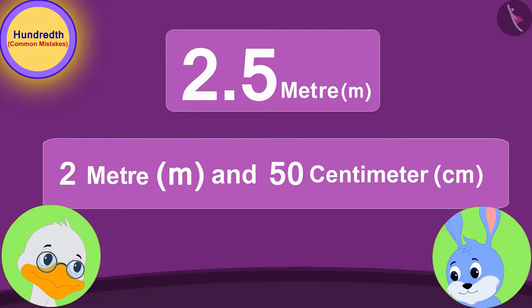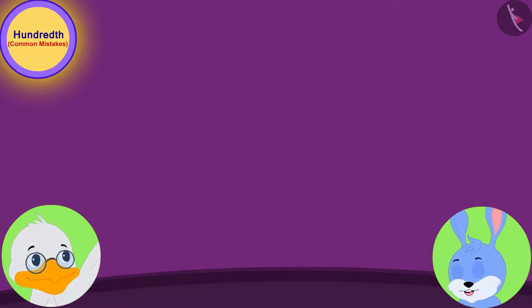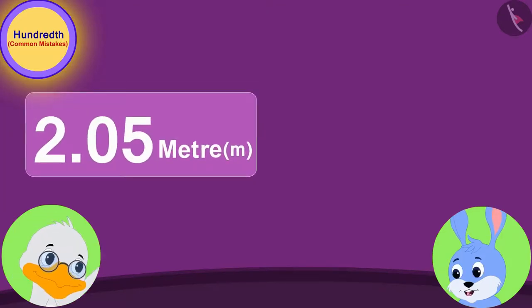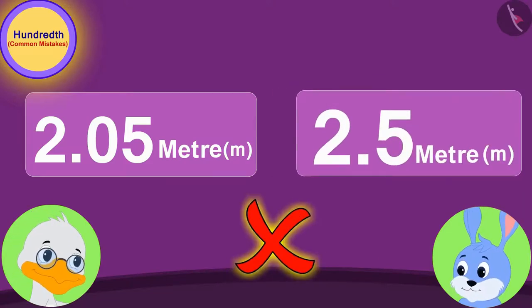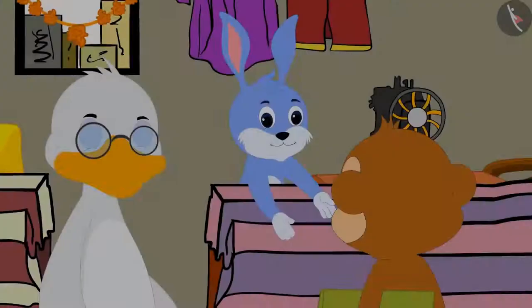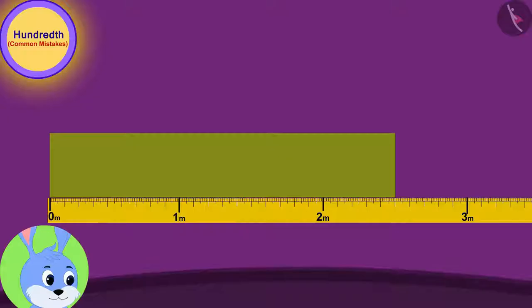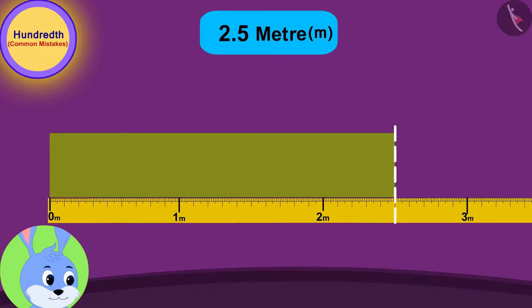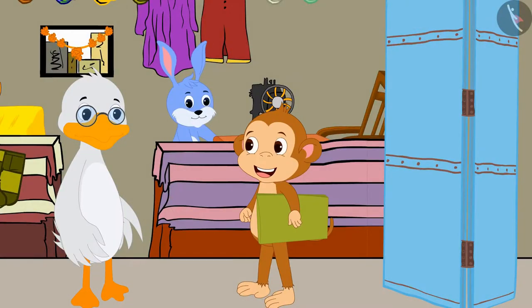Uncle explained this to Bunny. Bunny said, "Now I understand, Uncle, that 2.05 meters and 2.5 meters are not equal. And I accidentally gave Babban cloth of the wrong length." Bunny immediately took back the cloth from Babban and this time measured 2.5 meters, or 2 meters and 50 centimeters, of cloth using his tape, cut it, and gave it to Babban.